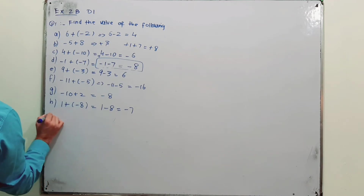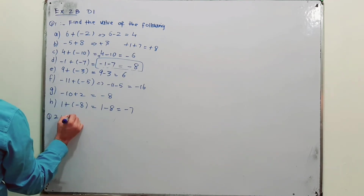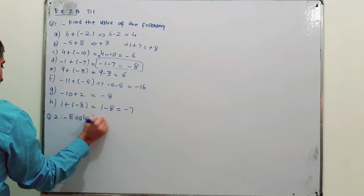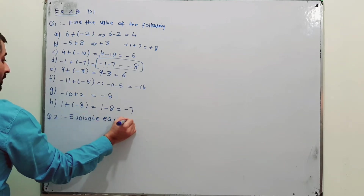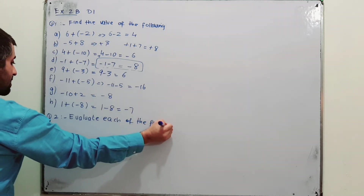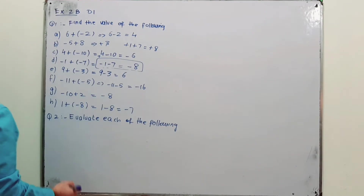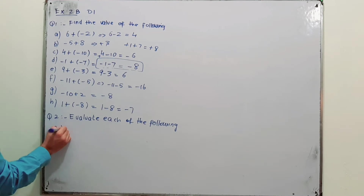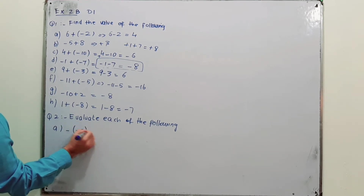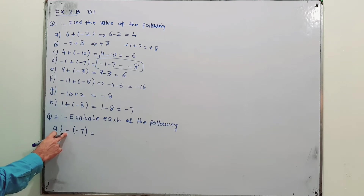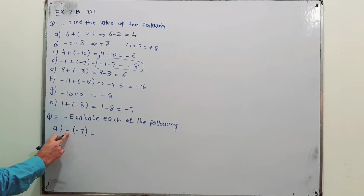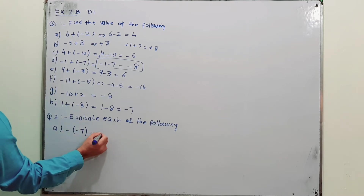Question number 2: Evaluate each of the following. Part A: minus (minus 7). We have a negative sign outside the bracket and negative inside. When you open the bracket, minus times minus gives plus, so the answer is plus 7.